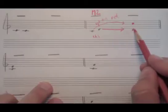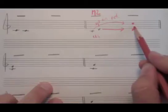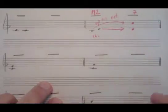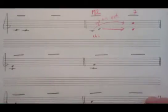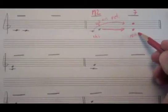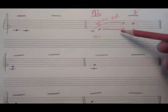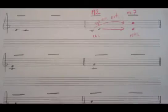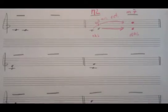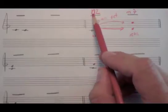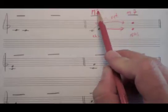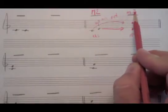Now let's find the second interval: D going to C. D is one, E is two, F is three, G is four, A is five, B is six, C is seven — so some sort of seventh. Counting half steps from D to C gives us ten half steps, which gives us a minor seventh. So a major second inverts to a minor seventh. One rule we can see: major intervals invert to minor, and seconds invert to sevenths.